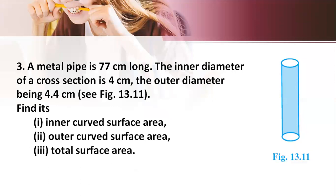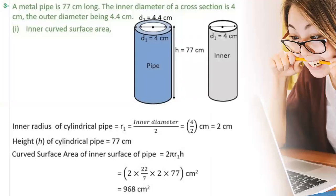Now let us see the third problem. A metal pipe is 77 cm long. The inner diameter of a cross section is 4 cm and the outer diameter is 4.4 cm. We need to find its inner curved surface area, outer curved surface area, and the total surface area. Here we are talking about a pipe in cylindrical shape which is hollow, so it has both an inner surface and an outer surface. Given the inner diameter is 4 cm, therefore the inner radius r₁ = diameter/2 = 2 cm. And the height of the cylinder is 77 cm.